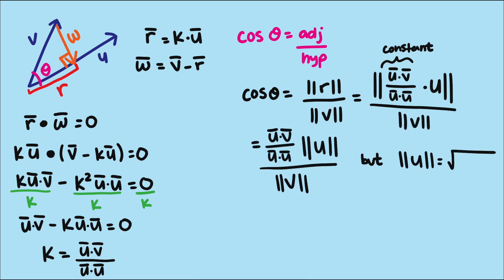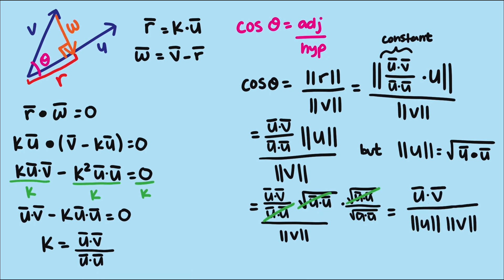If we recall what we learned last video about the length of a vector being the square root of the dot product with itself, we can then simplify this part of the expression and we're left with our final formula.